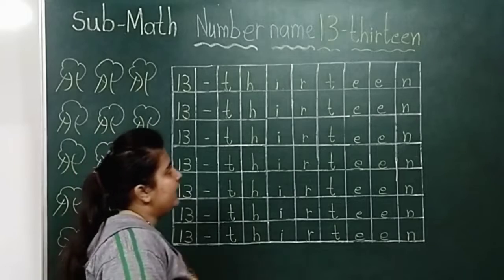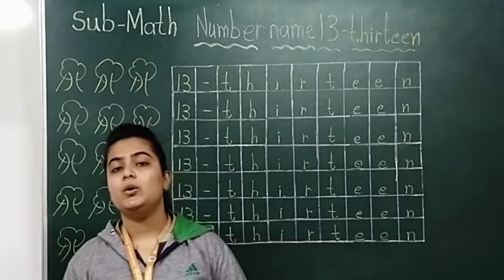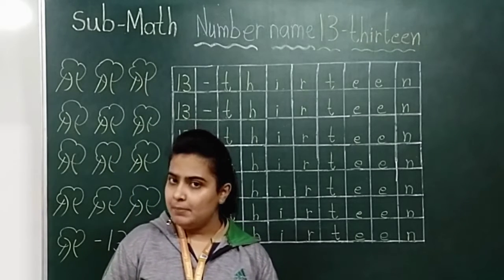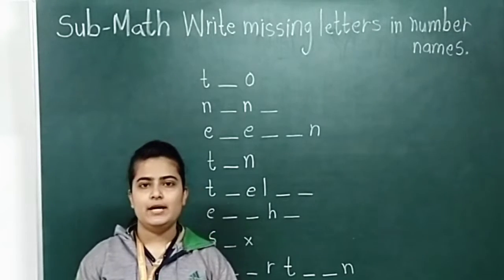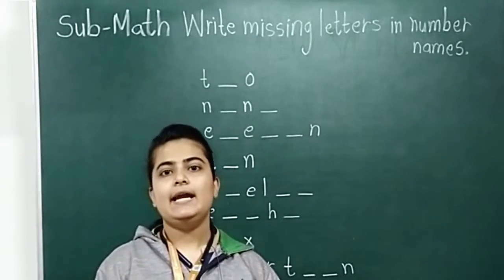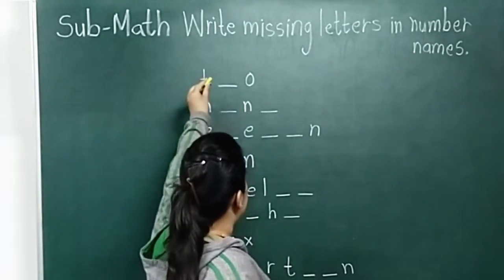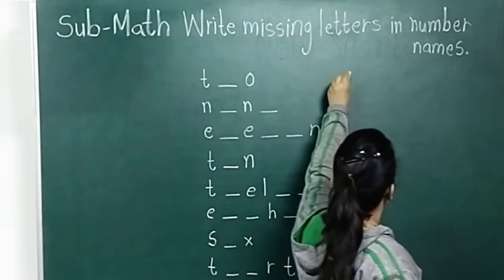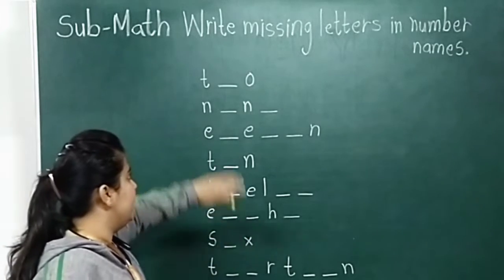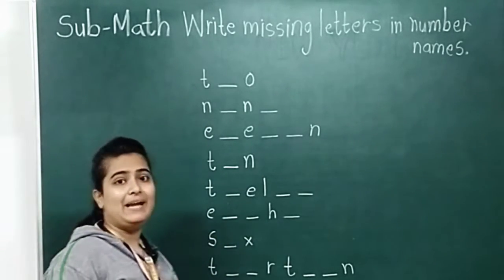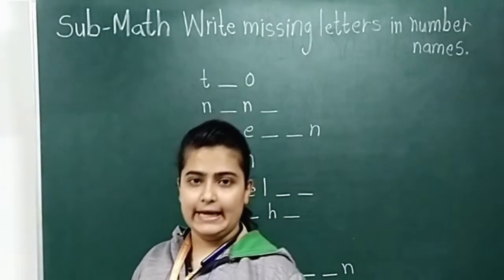Okay kids, so number name 13 is done. Now we will do one activity related to number names. The name of this activity is 'Write Missing Letters in Number Names.'